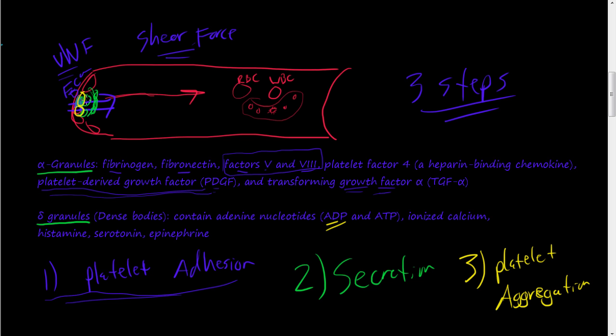you first get two original platelets binding through this van Willebrand factor, then they start releasing these granules, and ADP is the most common one. And then other platelets as they're passing by, will start attaching, attaching more to these original ones.